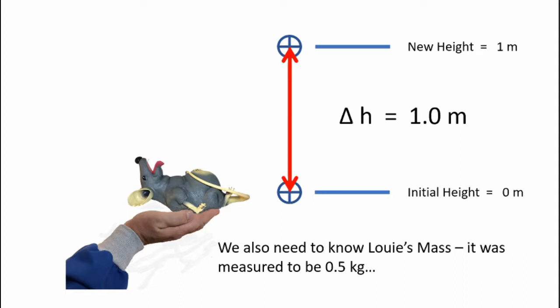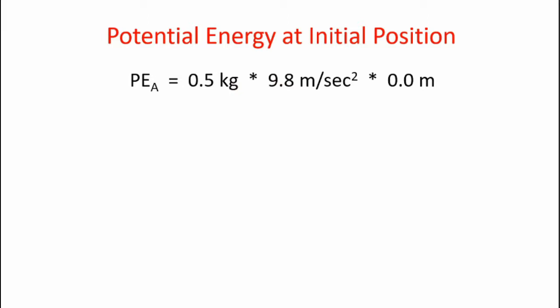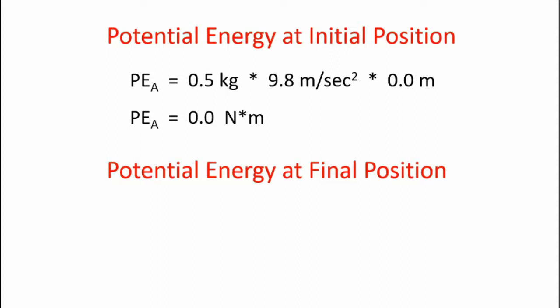Now we also need to know Louis mass, and it was measured to be 0.5 kilograms. First, let's take a look at the change of potential energy when we lift the weight up one meter. So potential energy at point A is 0.5 kilograms times 9.8 meters per second squared. But since we're starting at zero height, there is zero potential energy in this particular case. Our reference is point A, which is zero height. But the potential energy at the final position is calculated as PE at point B is 0.5 kilograms times 9.8 meters per second squared times the one meter in height change. So that gives us a potential energy at point B of 4.9 newton meters. Now recall that kilograms times acceleration due to gravity is force, and that's a newton.